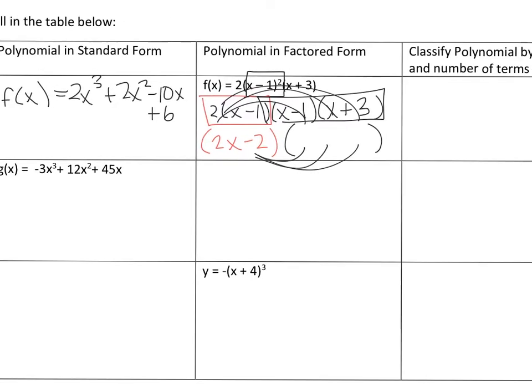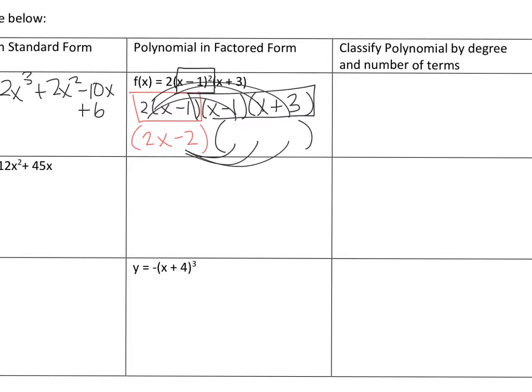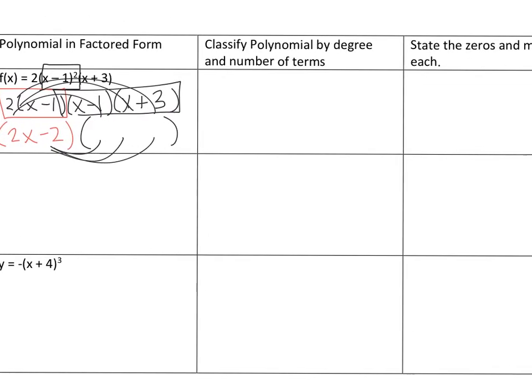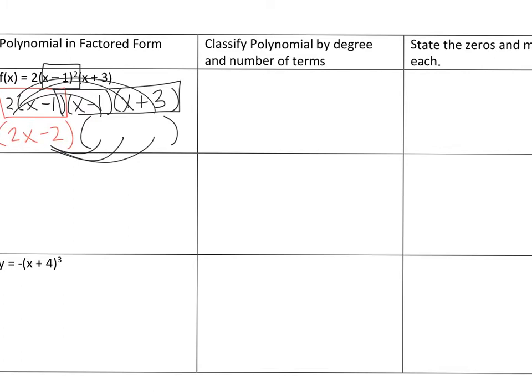To classify the polynomial by its degree and number of terms: its degree is 3, so you're going to call it a cubic polynomial.